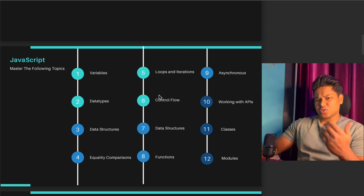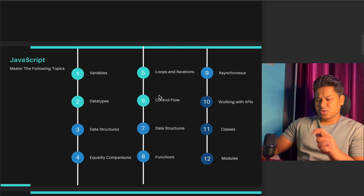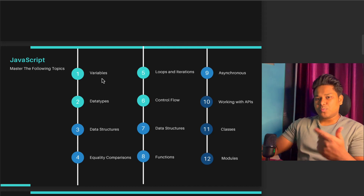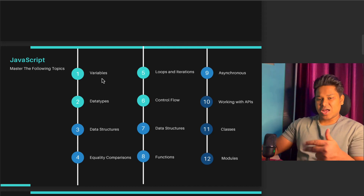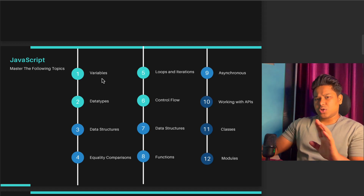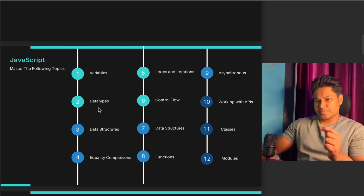There are a couple of topics you have to cover before you move to Solidity and smart contract development. The very first topic is variables — what a variable is, how to declare a variable, how you can manipulate variables when calling into functions, and how they can be declared in global scope. You have to understand every single thing about variables.